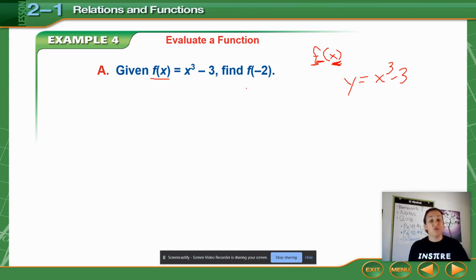When I give you something in functional notation, I will give you the original function. And then this part right here, this is the actual question. It says, find f of negative 2. What this actually means is, find out what this function is when x is equal to negative 2.